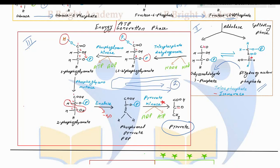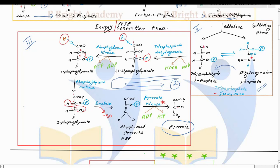This cycle is going to repeat two times, so whatever energy we get here, we need to multiply it by two. Glyceraldehyde-3-phosphate runs and completes the final formation of pyruvate, then dihydroxyacetone phosphate gets converted to glyceraldehyde-3-phosphate, which can repeat the same steps. That is why we have to multiply all the energy molecules we get by two. Let's see how many energy molecules we get when glyceraldehyde-3-phosphate is converted to pyruvate.